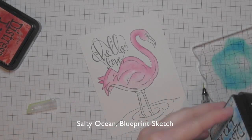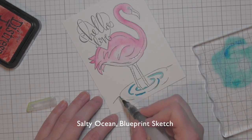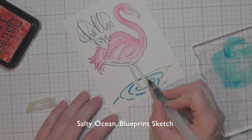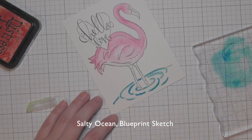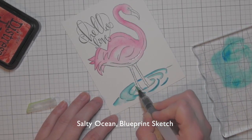Once this is completely dry, I'm going to start coloring in the water. I'm using a combination of salty ocean and blueprint sketch. First the salty ocean, blend that all out down here.